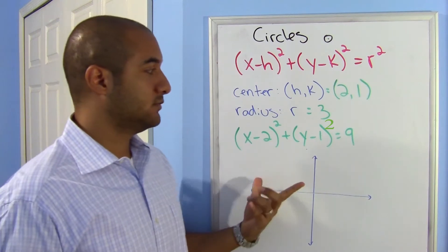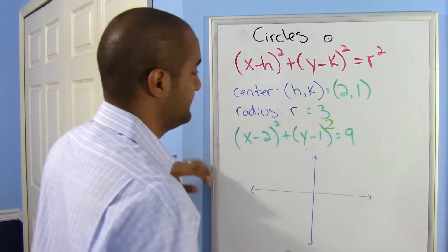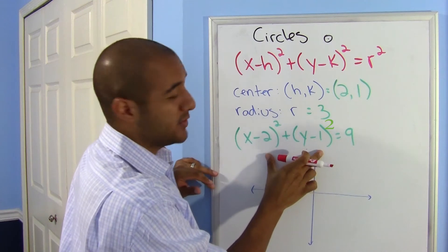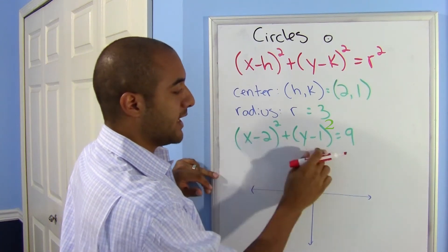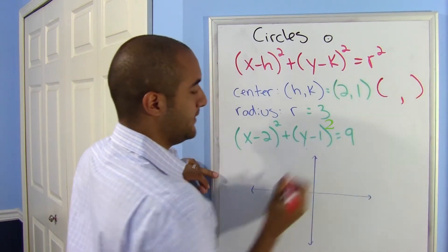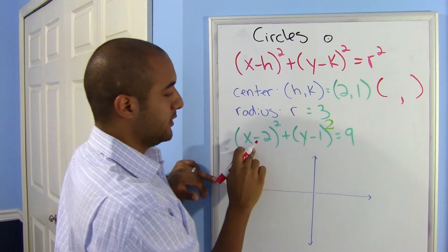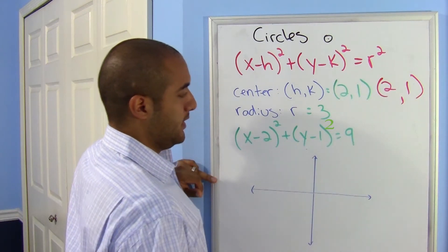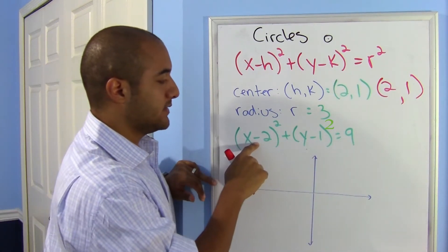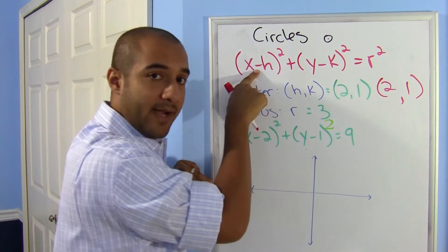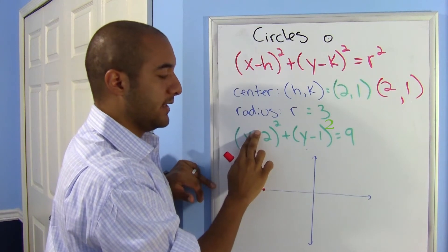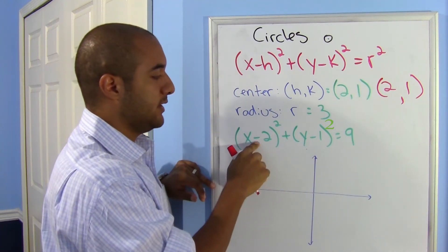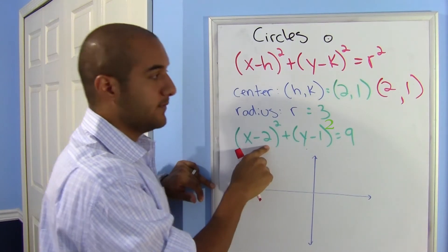Alright, let's use the example I just gave you. Here we're going to graph our circle using our equation. The first thing you need to look at is your center. So if I only had this information, I would say: where is the center? My x-coordinate is 2 and my y is 1. Some people make the mistake of saying it's negative 2, but it's not. Remember, the equation is supposed to have a minus sign there, so if it does, your x is just 2 and your y is just 1. If it said plus 2, then your x would be negative 2. So be careful with that.